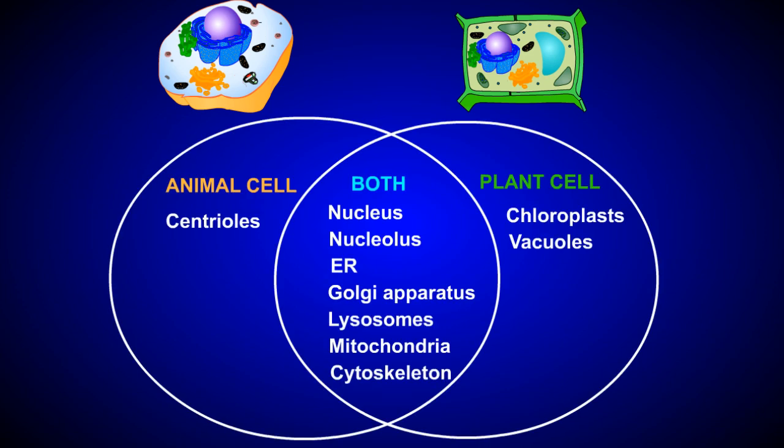Let's do a quick recap. As we've seen, the internal structure of a eukaryotic cell is fairly complex and differs slightly between a plant cell and an animal cell. This diagram will help you remember some of the similarities and differences.